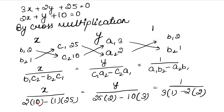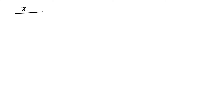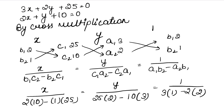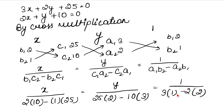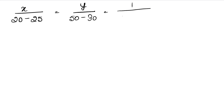So x upon (2×10 = 20, minus 25). For y: 25×2 = 50, minus 30. And for the constant: 3×1 = 3 minus 2×2 = 4, giving 3 minus 4. Now solving: x upon (20 minus 25) — opposite signs, so subtract and take the sign of the larger value. Similarly for y. This gives x upon minus 5, equals y upon 20, equals 1 upon minus 1.